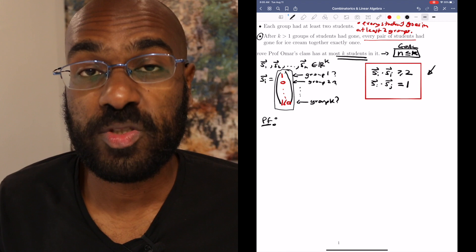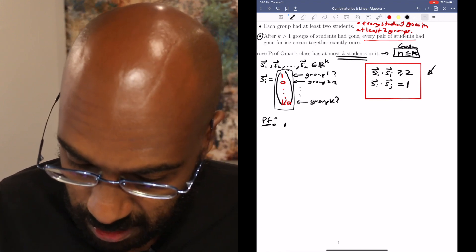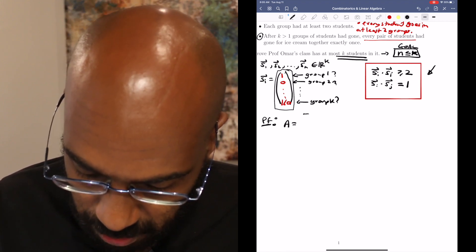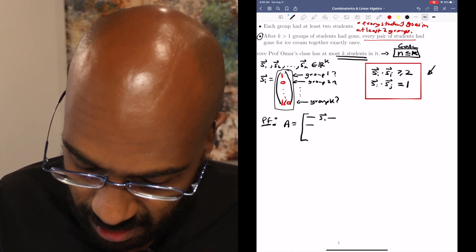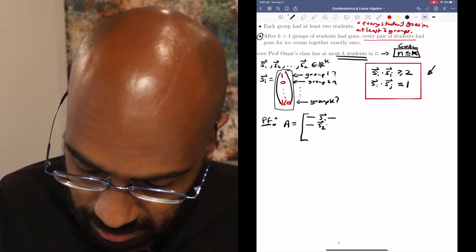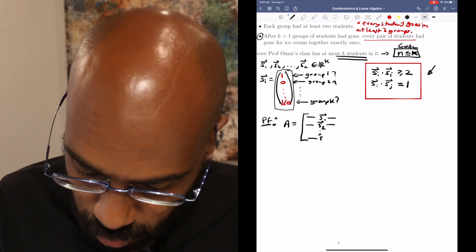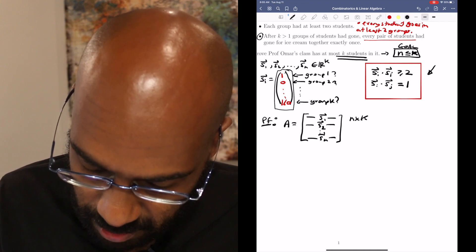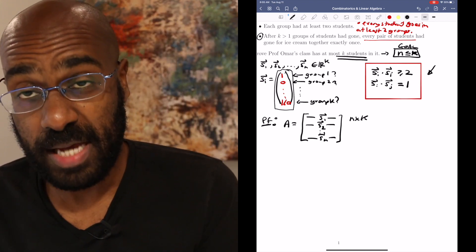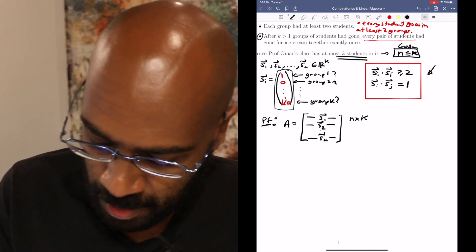So let's take a look at how that's going to work. Okay, so for this approach we're going to use the same vectors, but we're going to take the vectors and put them in a matrix. So the matrix is going to have these SIs as its rows. Okay, so this matrix has n rows and k columns because each of the SIs are in RK.